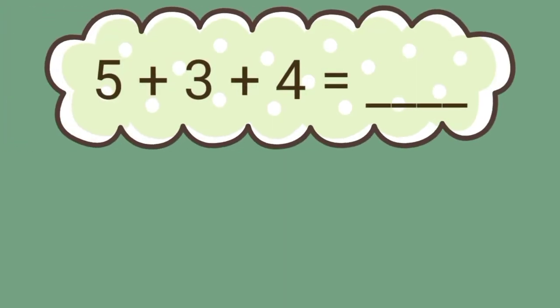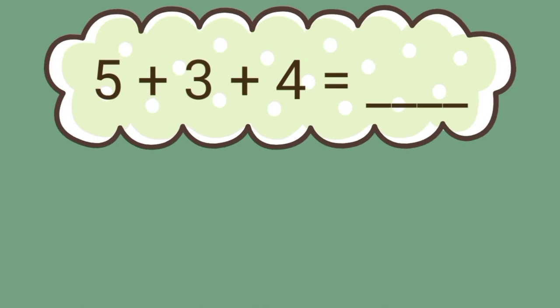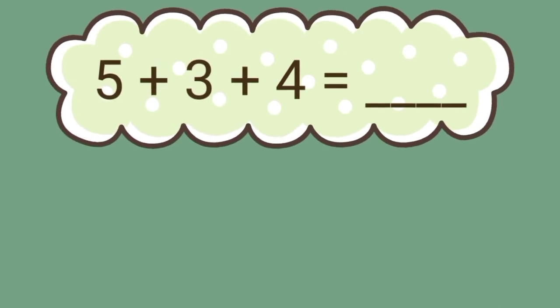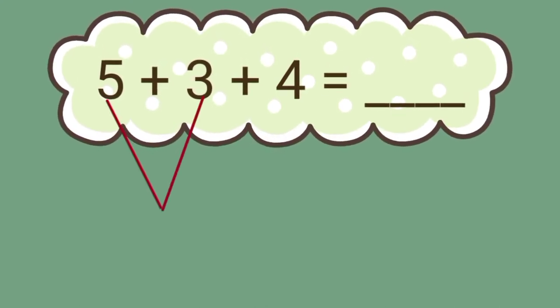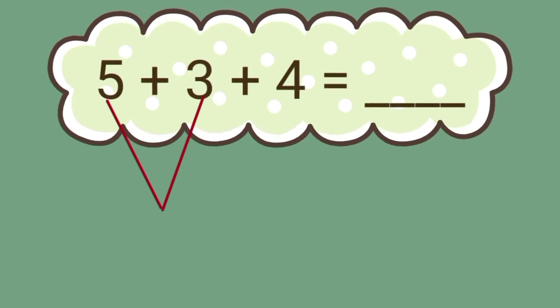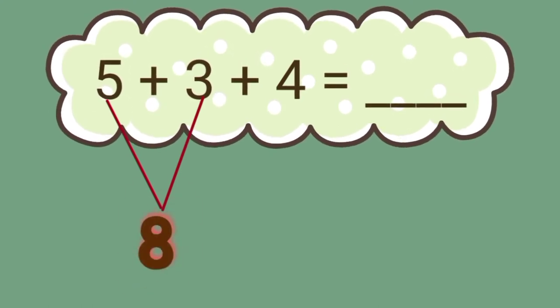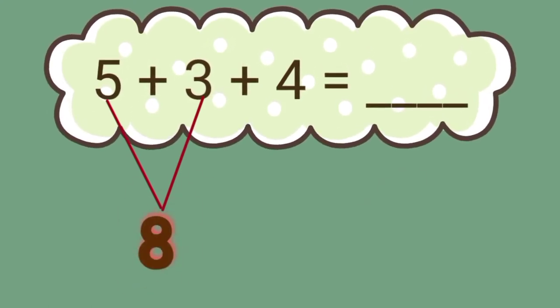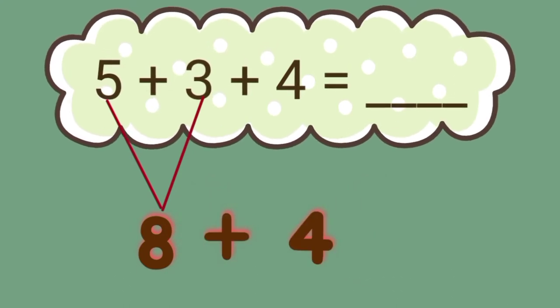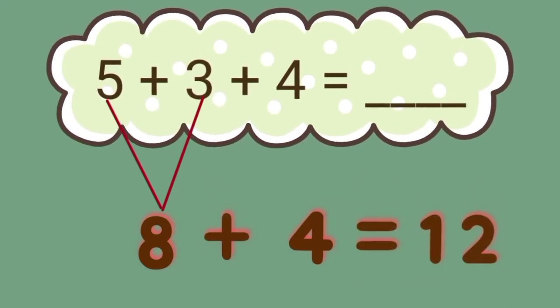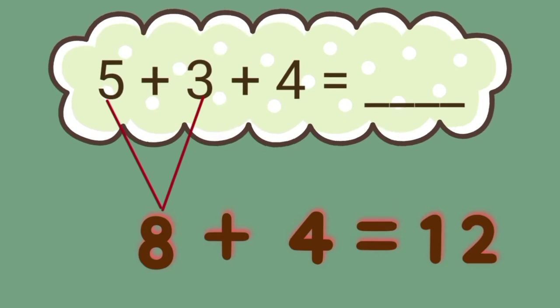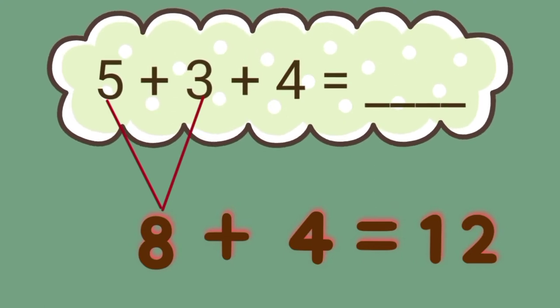Let's have another example. How do you find the sum of 5 plus 3 plus 4? First, we add 5 and 3. 5 plus 3 equals 8. 8 plus 4 equals 12. So 5 plus 3 plus 4 equals 12.